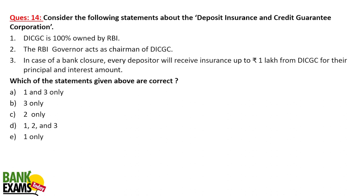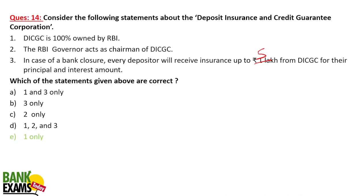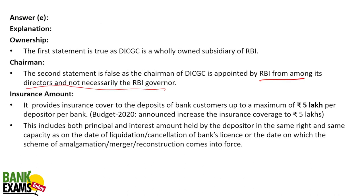Which of the following statements are correct about DICGC — Deposit Insurance and Guarantee Corporation? DICGC is 100% owned by the Reserve Bank of India, and there is an insurance cover of 5 lakh rupees — not 1 lakh. The RBI Governor is not necessarily the chairman; the chairman is appointed by RBI from its directors, and not necessarily the governor. So any director of RBI can be the chairman of DICGC — may or may not be the governor. So only one statement is correct: DICGC is 100% owned by the Reserve Bank of India.